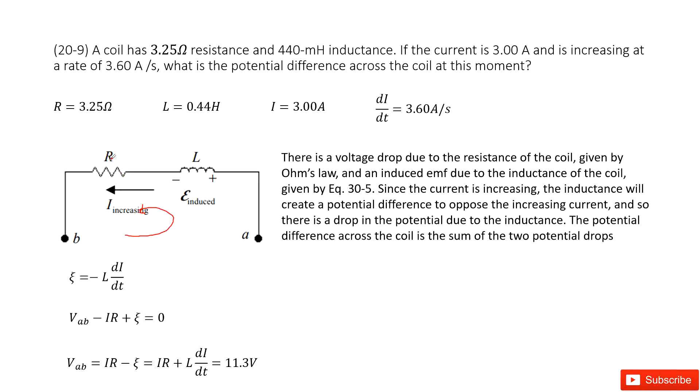When it goes through the resistance, the voltage drops, so we have minus IR. Then when it goes through the inductor, we have the induced EMF. The equation is V_AB - IR + ε = 0.